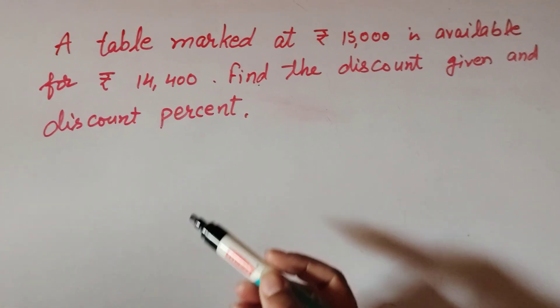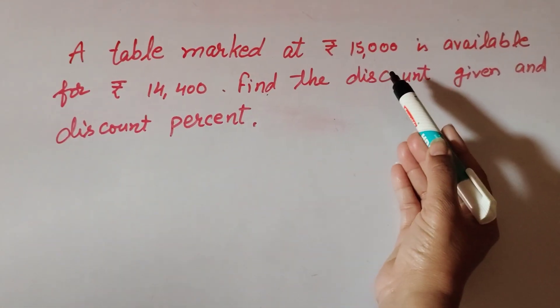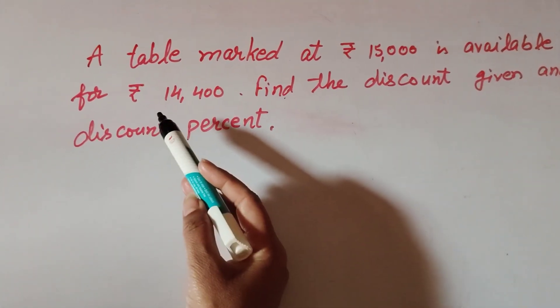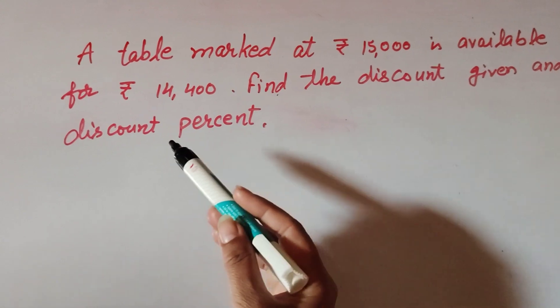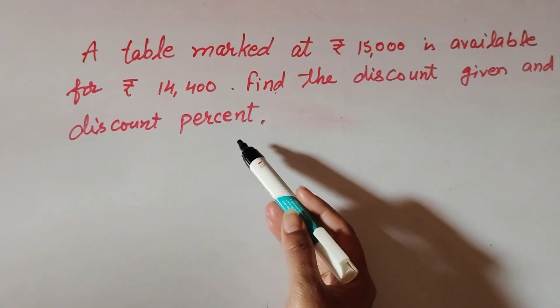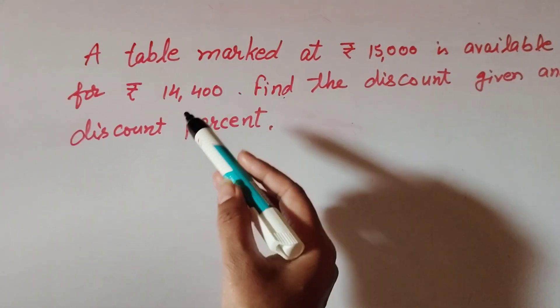Hello friends, welcome to my channel. In this video we discuss a table marked at ₹15,000 is available for ₹14,400. Find the discount given and discount percent. So in this question, two things are given: mark price and its selling price. We find discount and discount percentage. So let's start.